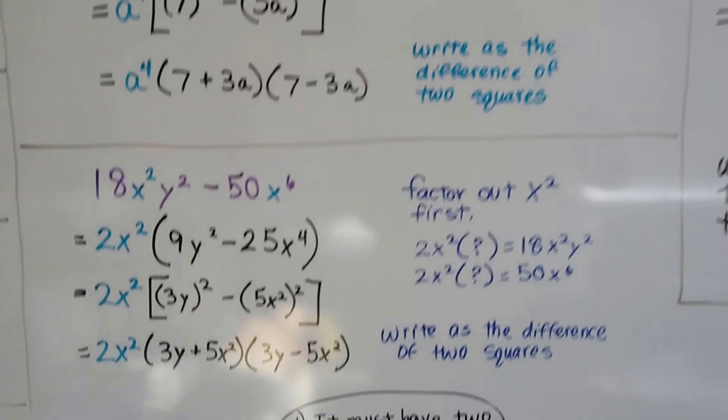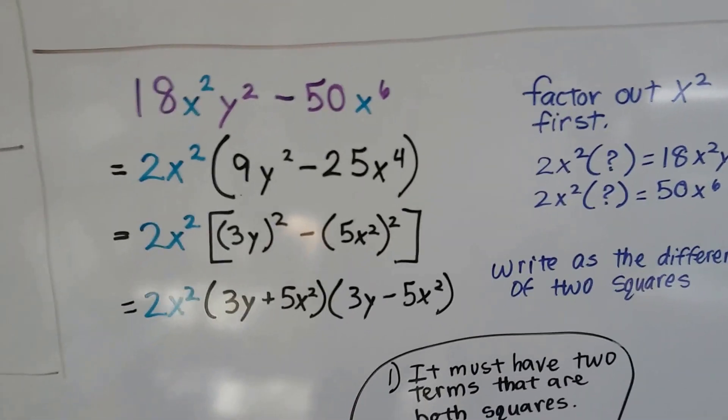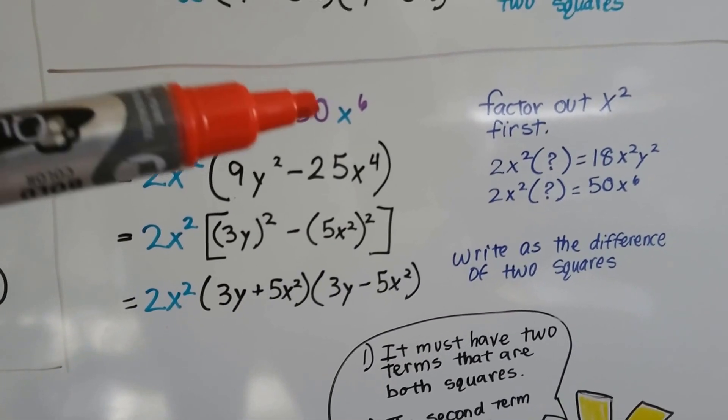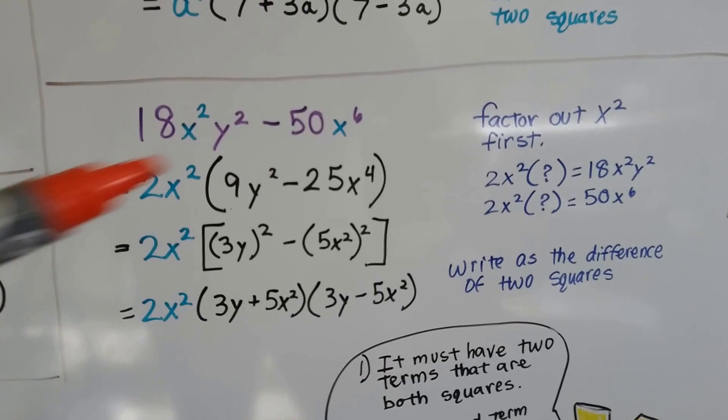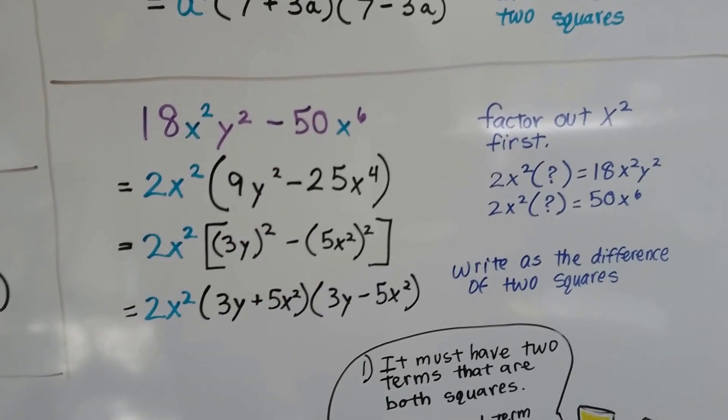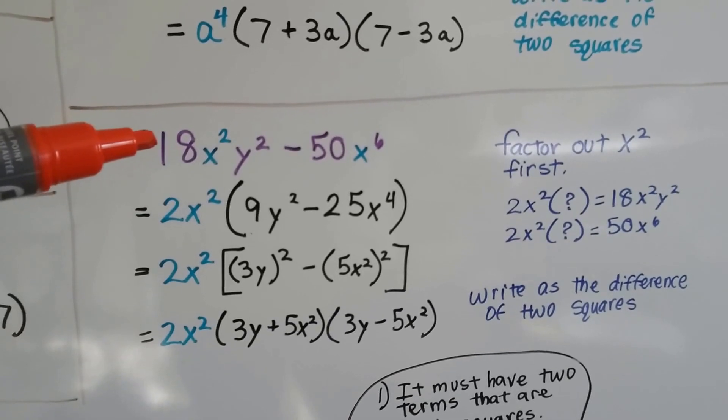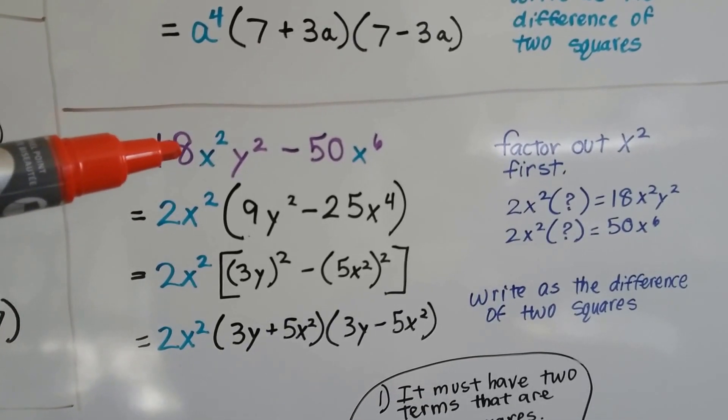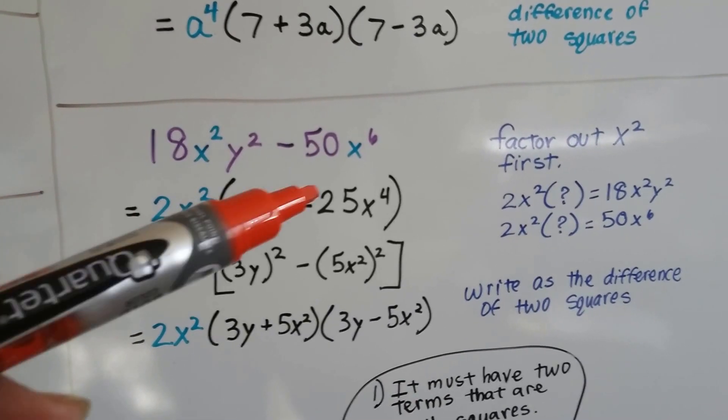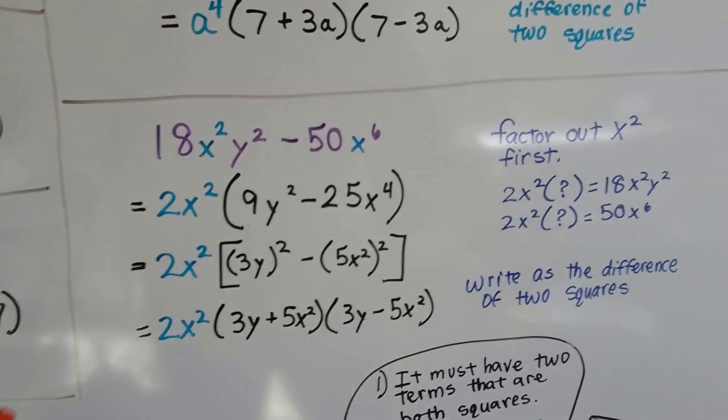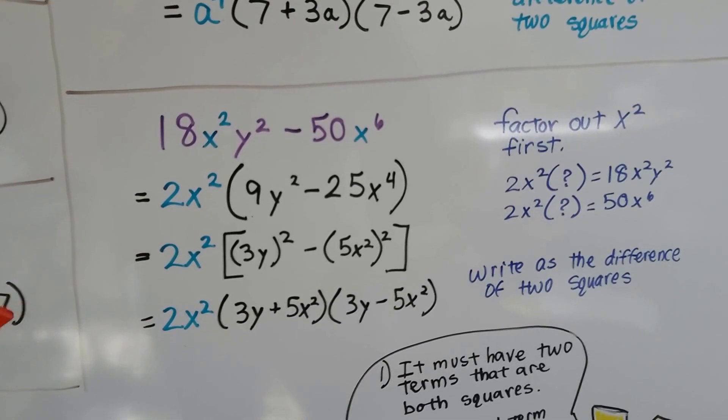Let's try it again. Now we've got 18x²y² minus 50x^6. How do you square that 50? This is going to be tricky. We can do a 2, and split this 18 into 2, and split the 50 into 2, and then that will give us 25. And that 9 will give us a square, and the 25 would be a square. Then we'd have our two squares.